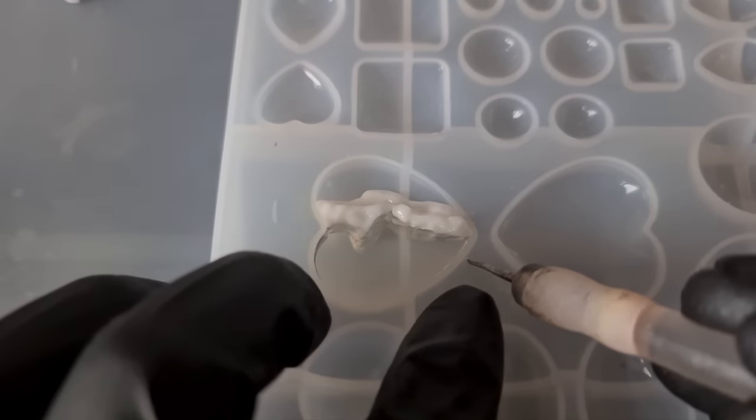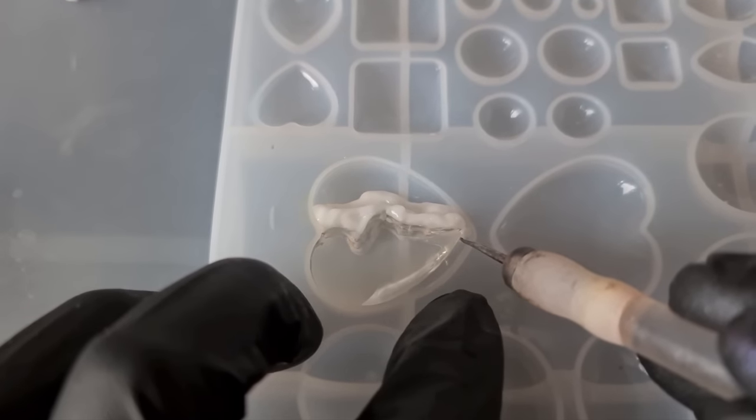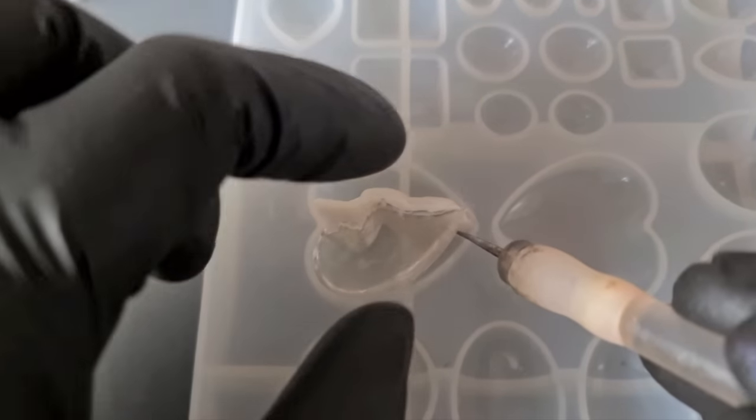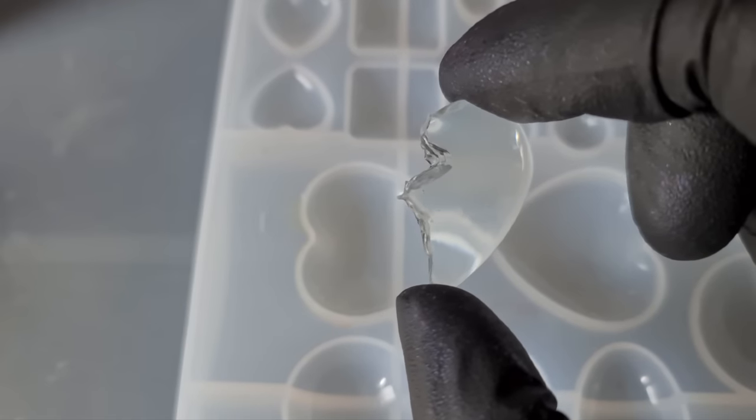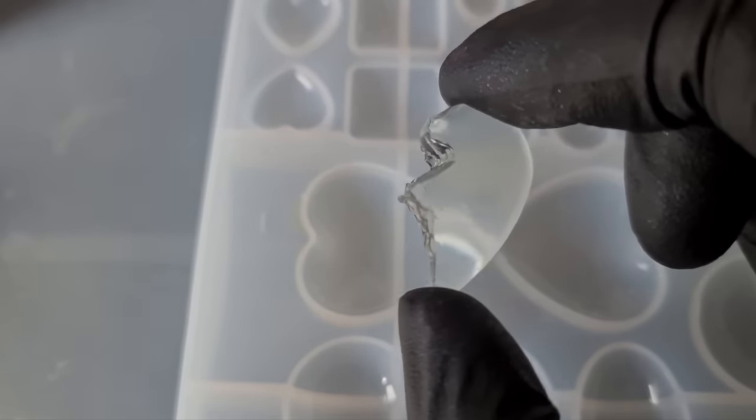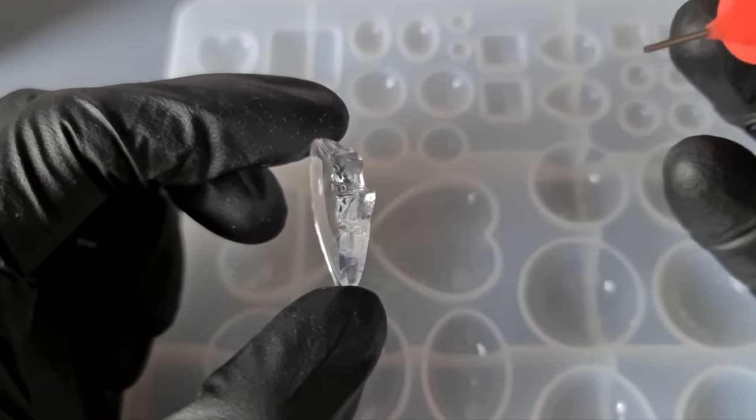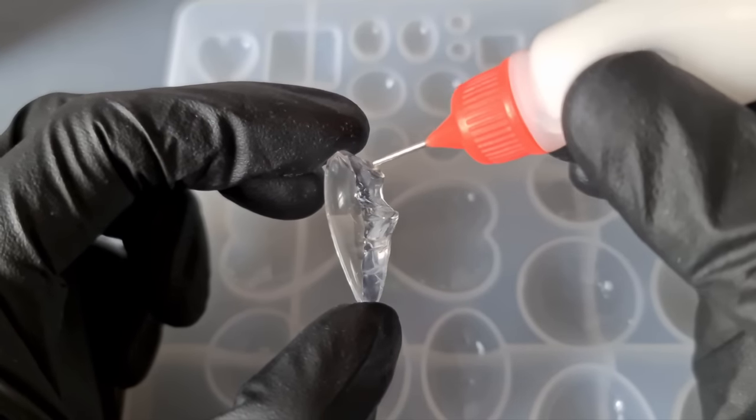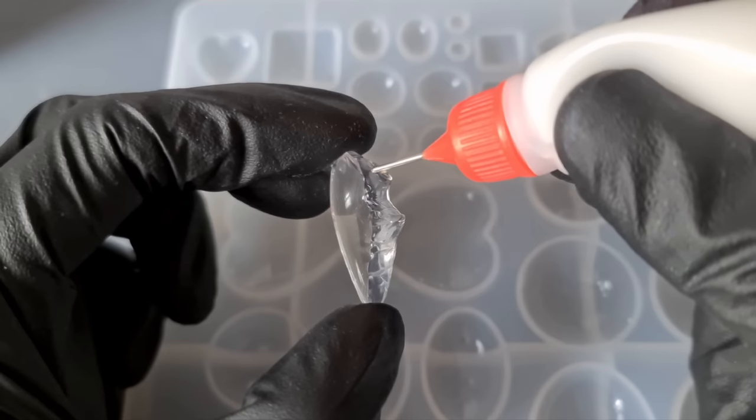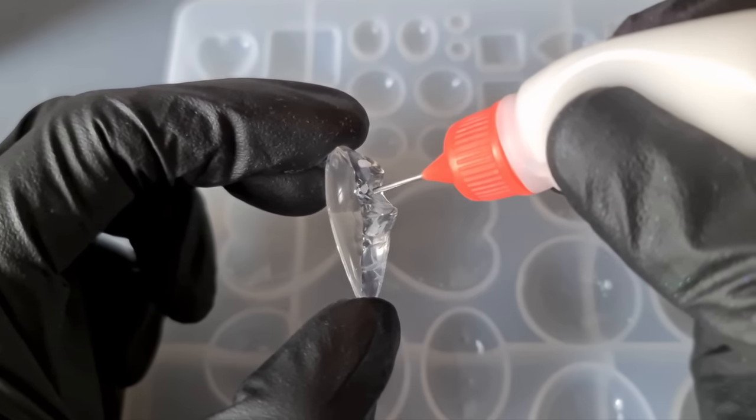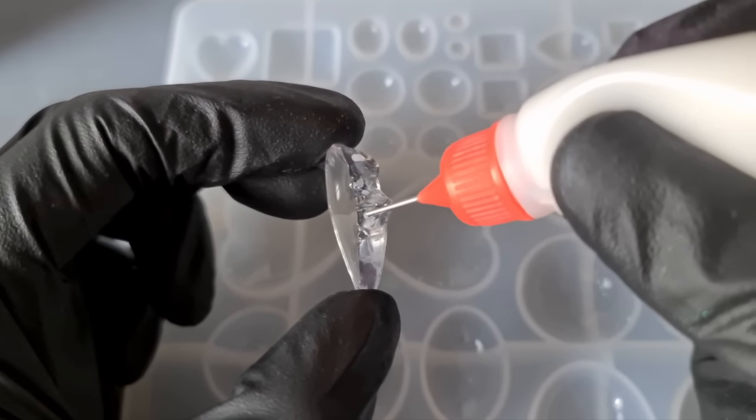And then we just take that out and again just give it a water cure just to make sure. So this is what you're going to be left with, a fragment of the heart. So we take our needle tip bottle again and just apply some small dabs over that crack. Not too much.